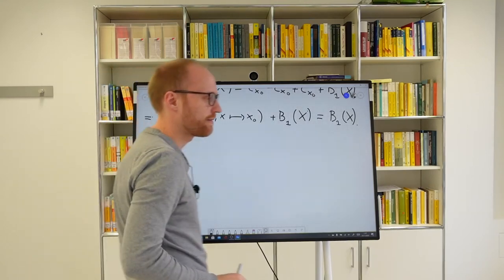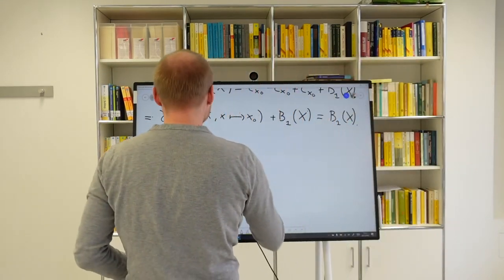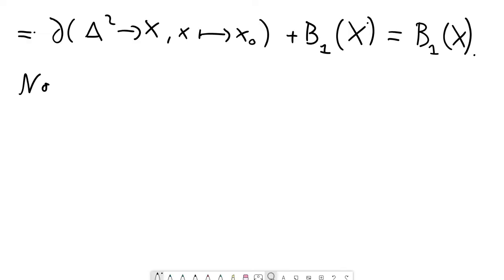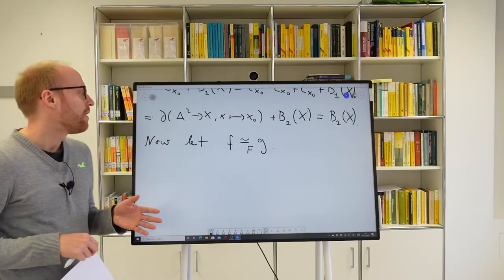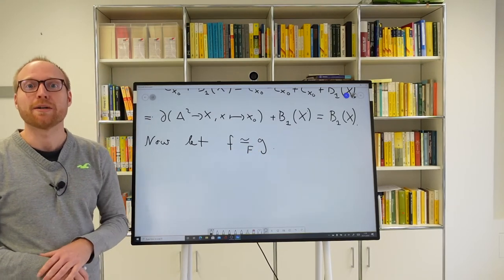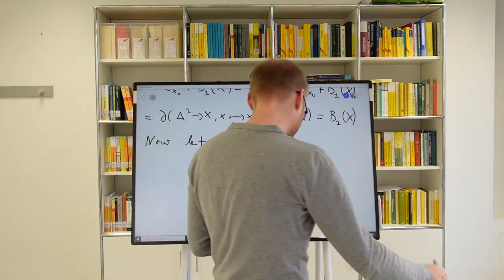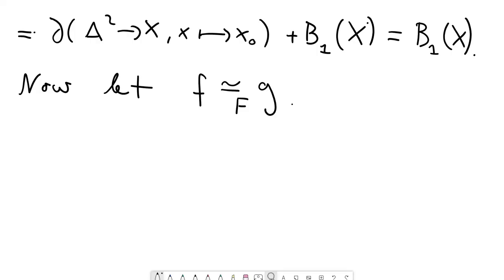Let's do the well-definedness. We assume we have two homotopic loops f and g — these are homotopy classes of loops — and we fix a homotopy capital F realizing this homotopy between f and g. These are homotopic loops relative endpoints. We need to show that when we consider them as one-cycles, they are actually homologous, meaning we must construct a two-chain whose boundary is the difference of these two one-cycles.